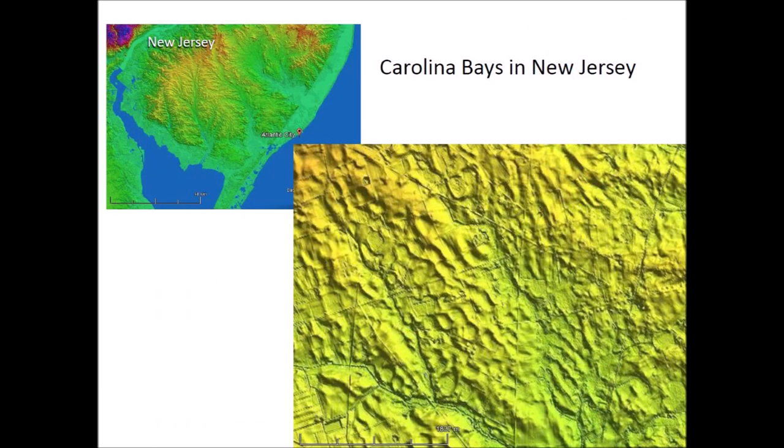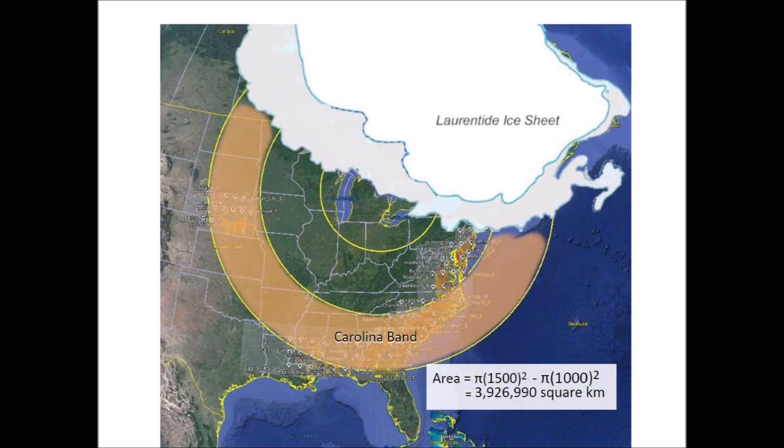The Carolina Bays in New Jersey are relatively small, typically measuring from 100 to 200 meters — a little bigger than a football field. The second circular band between the 1000 and 1500 kilometer mark includes the Nebraska Rainwater Basins and the Carolina Bays in North and South Carolina. This band includes the largest bays and has an area of 3,926,990 square kilometers. In Nebraska, the bays are difficult to count because most of the bays smaller than 4 kilometers have disappeared due to erosion, but we can compensate by using the density of the bays in the portion of the band along the east coast.